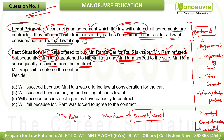Mr. Ram subsequently resigned from the contract — meaning he later made the contract voidable because he said his consent was not given freely. Mr. Raja then filed a suit to enforce the contract, asking Ram to honor the agreement.